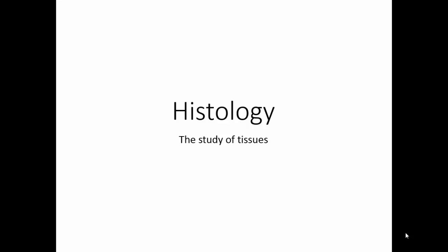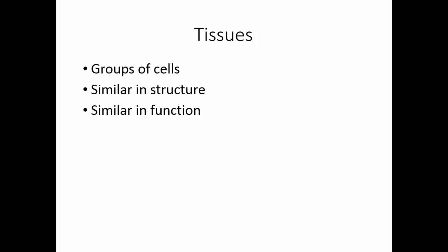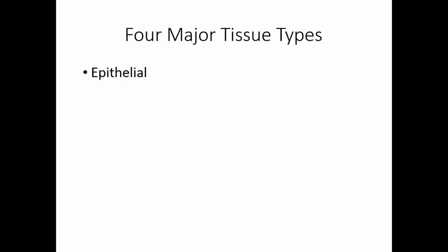Histology is the study of tissue. Tissues are groups of cells that are similar in structure and similar in function. These cells work together to perform a specific function. There are four major tissue types: epithelial, connective, muscle, and nervous.